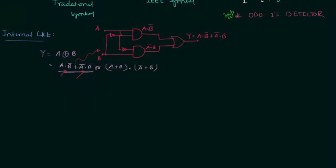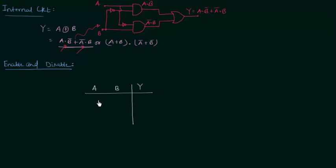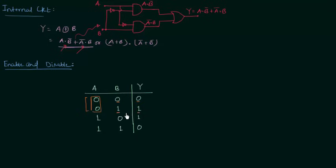Now we move to enable and disable for the XOR gate, which also has an important result. Looking at the truth table, when A=0, the output follows B exactly — output is 0 when B=0 and 1 when B=1. So A=0 enables the XOR gate and it acts as a buffer.